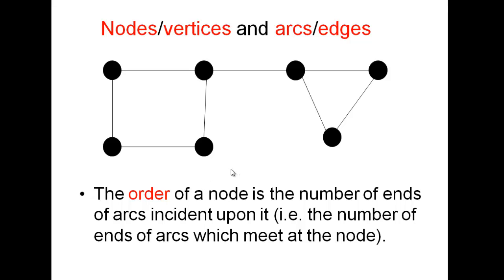The order of a node is the number of ends of arcs incident upon it. In other words, the number of ends of arcs that go to that node. So this node here would have order 2. This node here will have order 3 because we have three ends of arcs joining it.